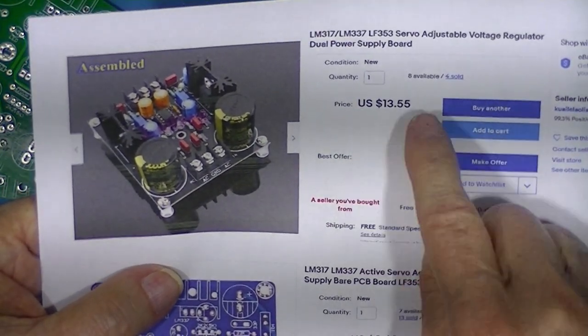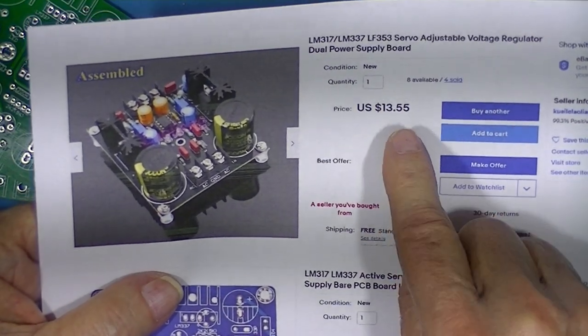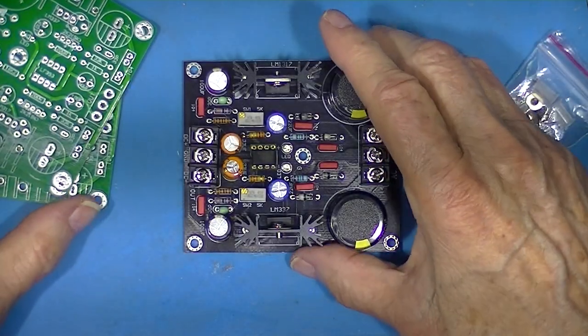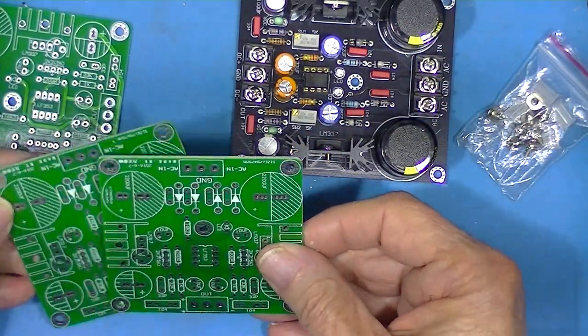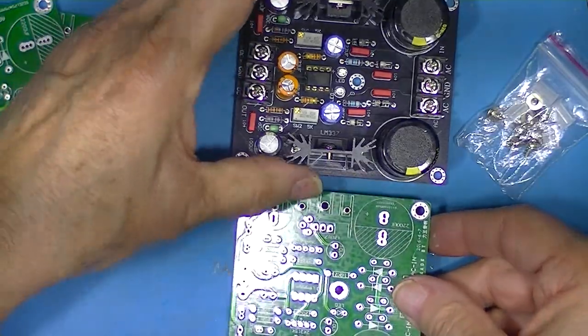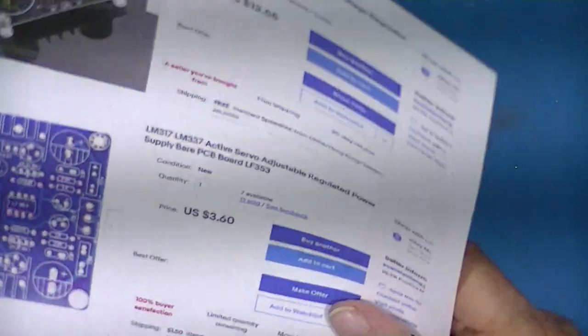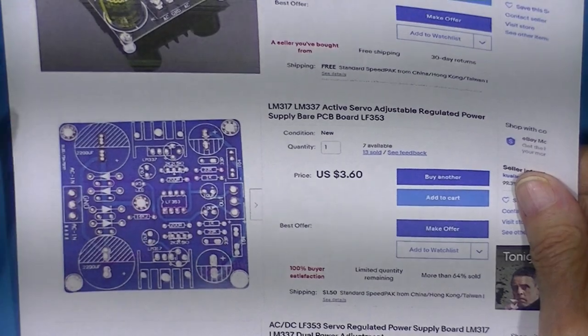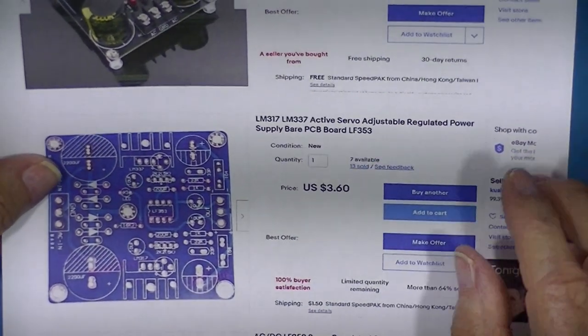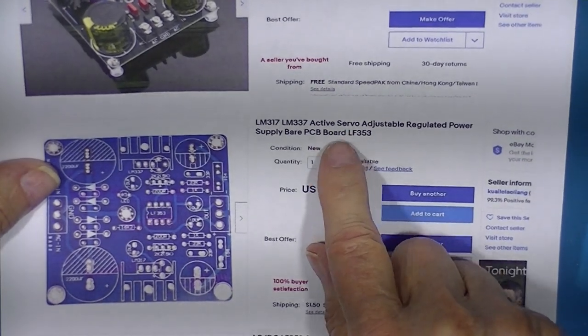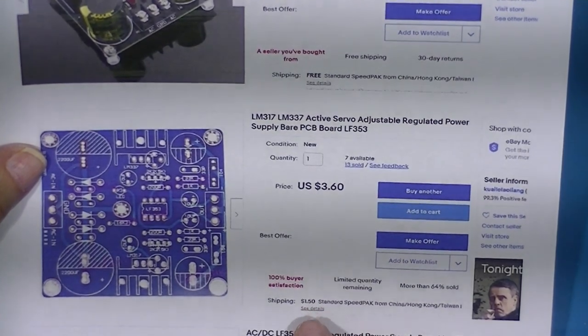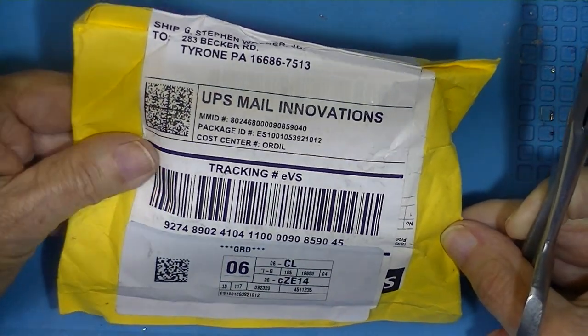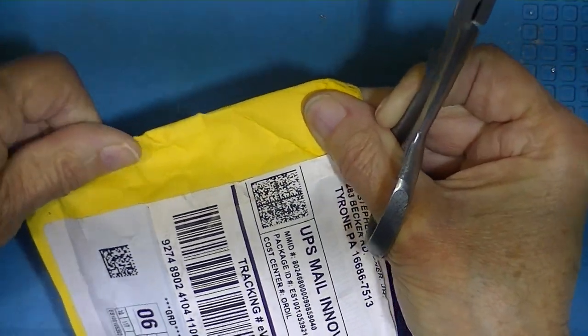So 14 dollars. And I bought three of these boards, which I thought would be identical. And this cost - each circuit board cost three dollars and sixty cents. And see they say again active servo. Well they cost 360 and probably a buck and a half shipping on all three of them. This is a package from China via eBay.